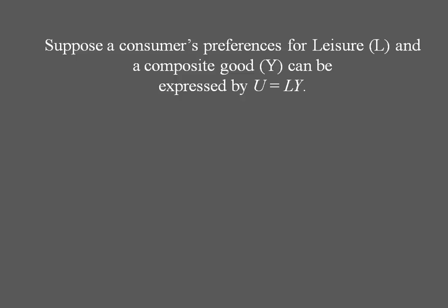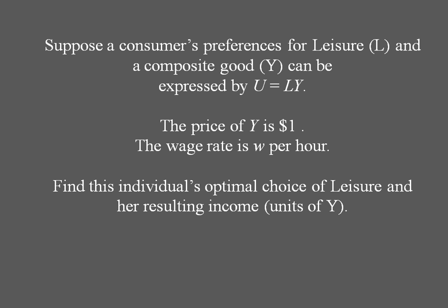Suppose we've got a consumer's preferences U equals L times Y, where L is leisure and Y is a composite good. Composite goods are normalized to have a price of a dollar, and we're going to have this consumer have a wage rate of W. Let's find their optimal choice of leisure and the resulting income at that bundle.